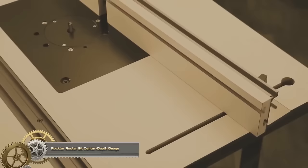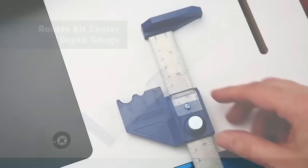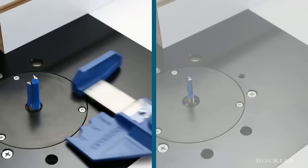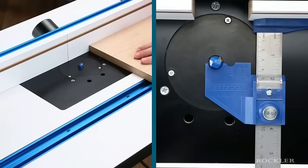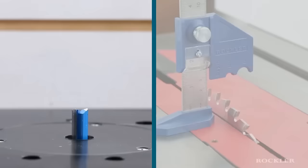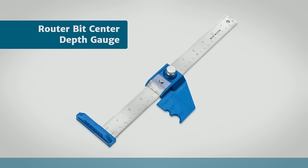The Rockler Router Bit Center Depth Gauge is a versatile and durable tool designed to simplify router bit adjustments. Crafted from durable steel, it features a precision-machined ruler with both metric and imperial measurements. The gauge serves two primary functions: centering router bits with 1/4 inch or 1/2 inch shanks, using its half-round notch and setting router bit depth with its hairline indicator. To center router bits, place the notch around the bit shank and align the router fence with the gauge. For setting bit depth, adjust the hairline indicator to your desired depth and match the router bit height accordingly. This tool is particularly valuable for router table users offering accuracy, versatility, and long-lasting durability.